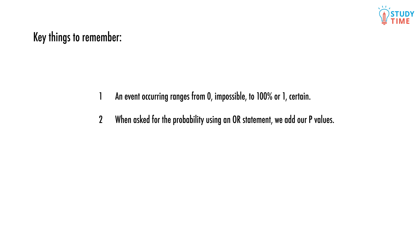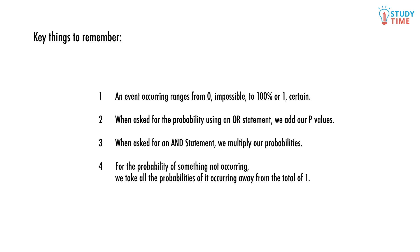When asked for the probability using an OR statement, we add our probability values. When asked for an AND statement, we multiply our probabilities. For the probability of something not occurring, we take all the probabilities of it occurring away from the total of 1. To find the number of something, just multiply the total by the probability, remembering to round appropriately.